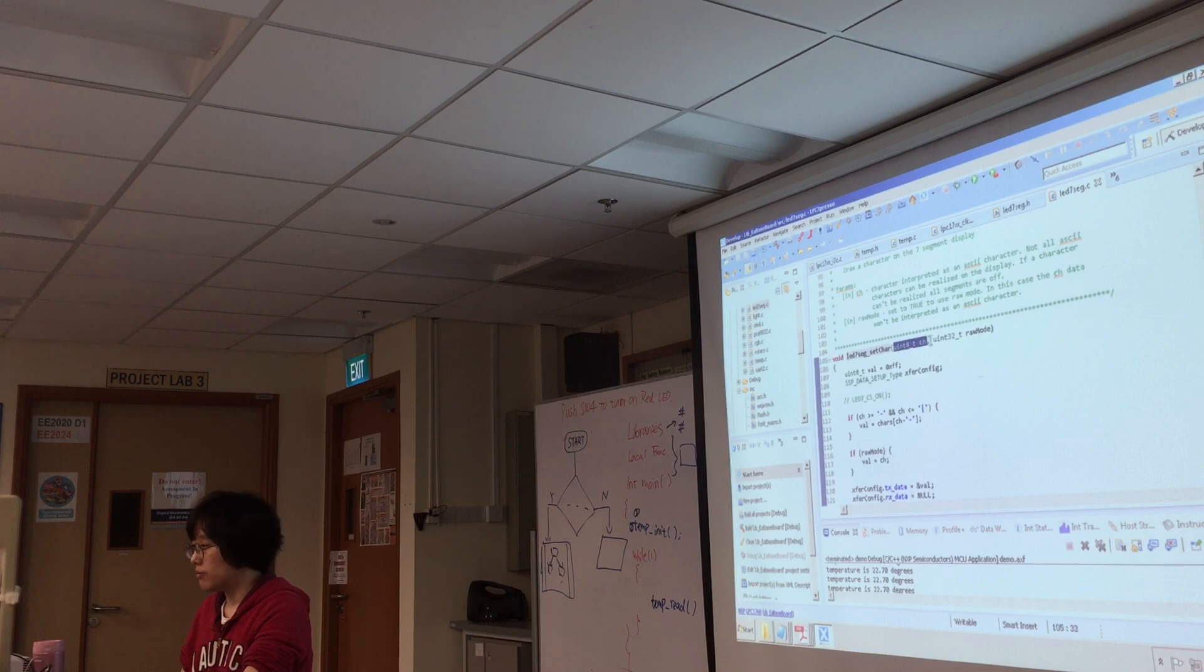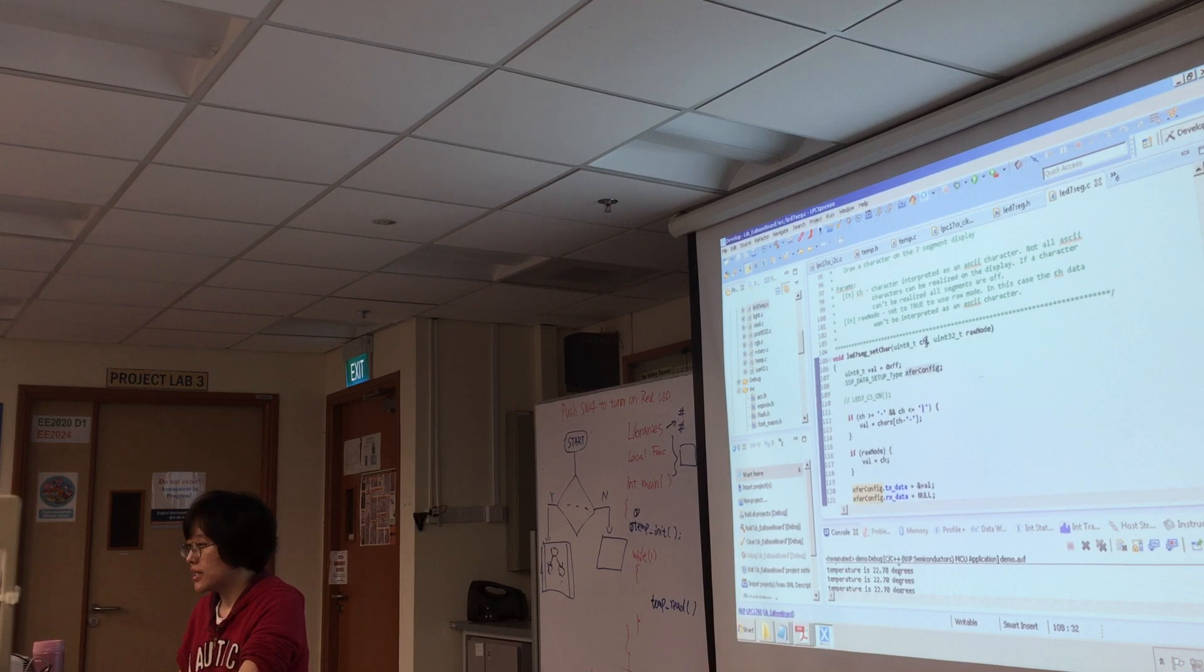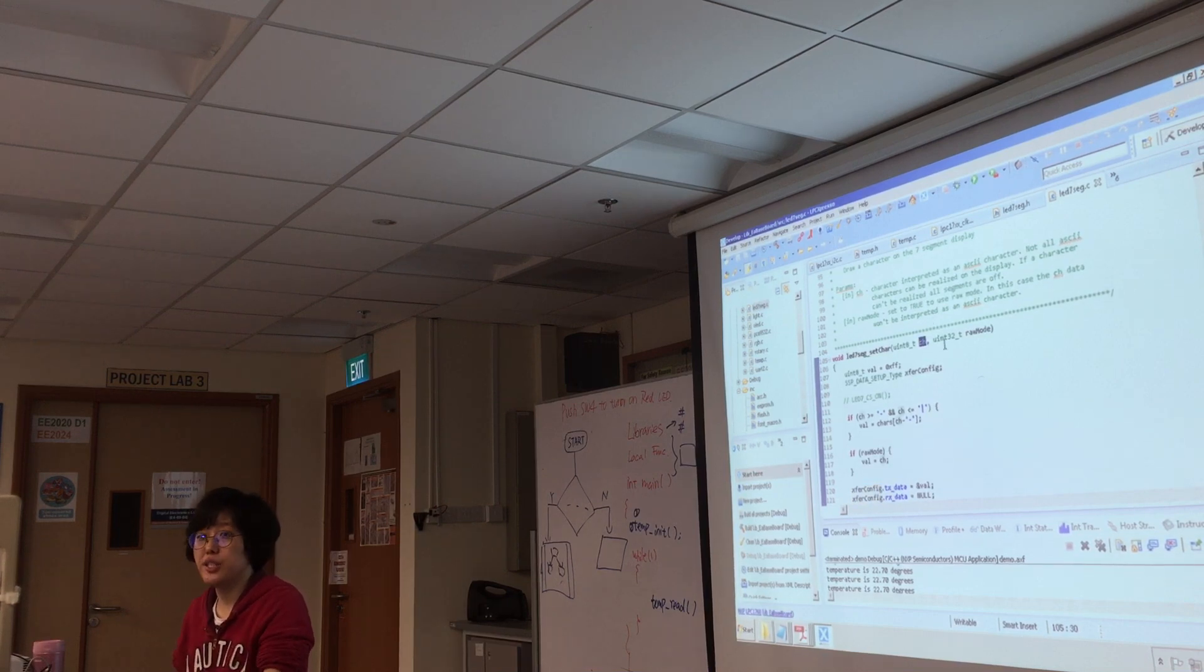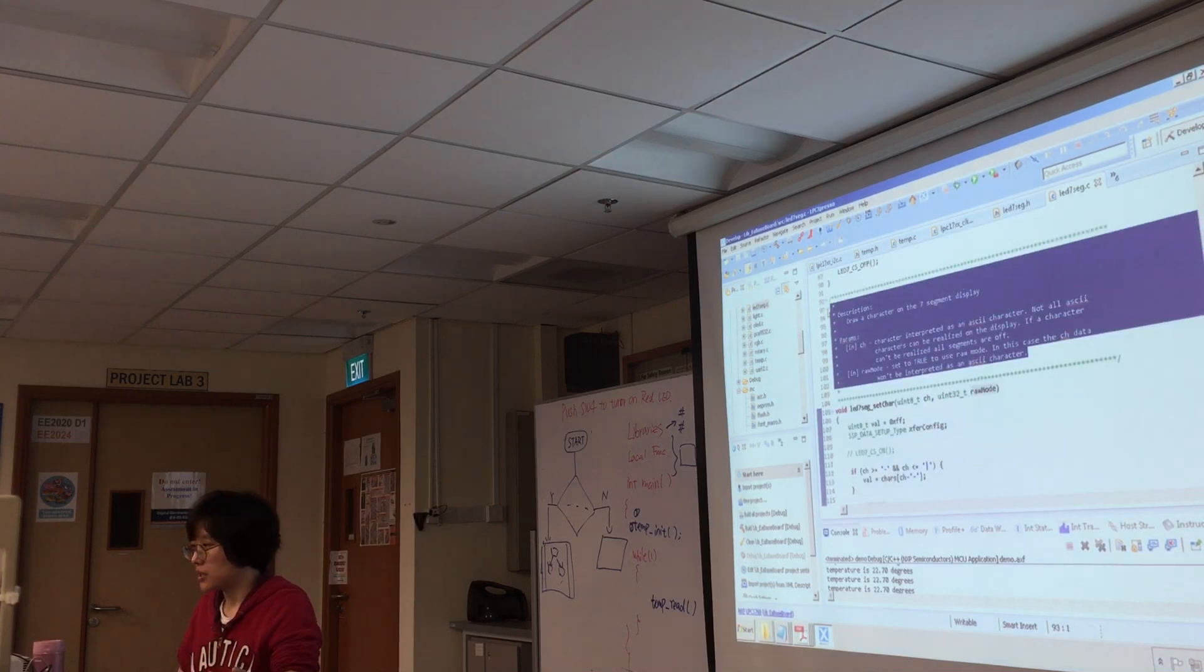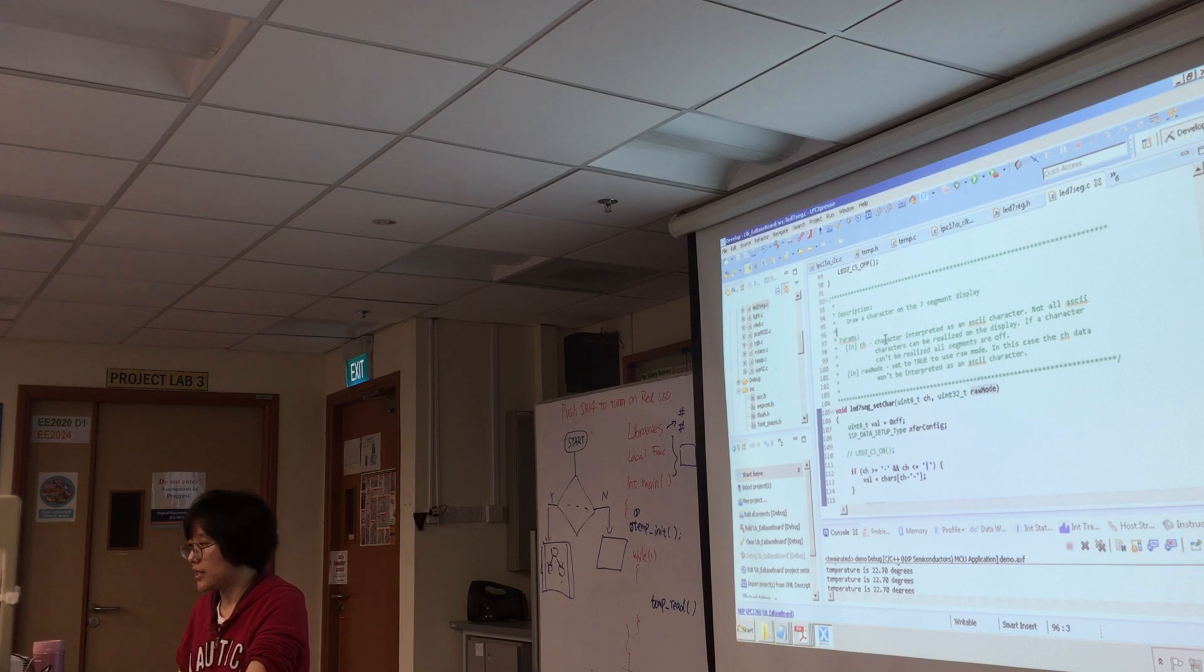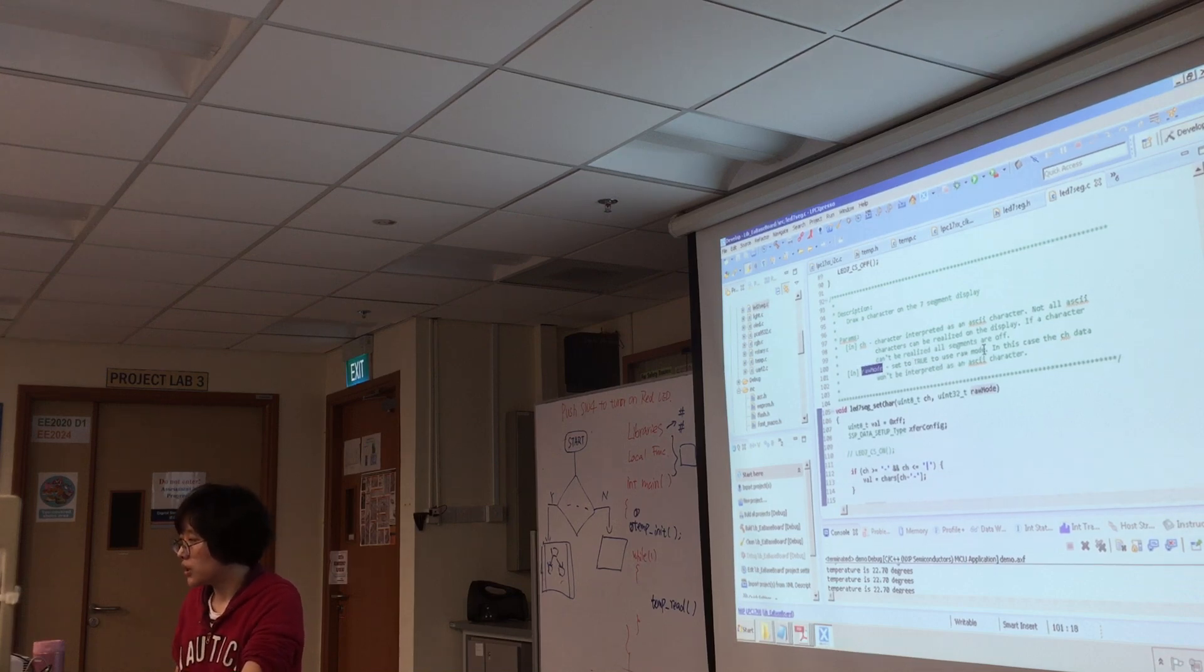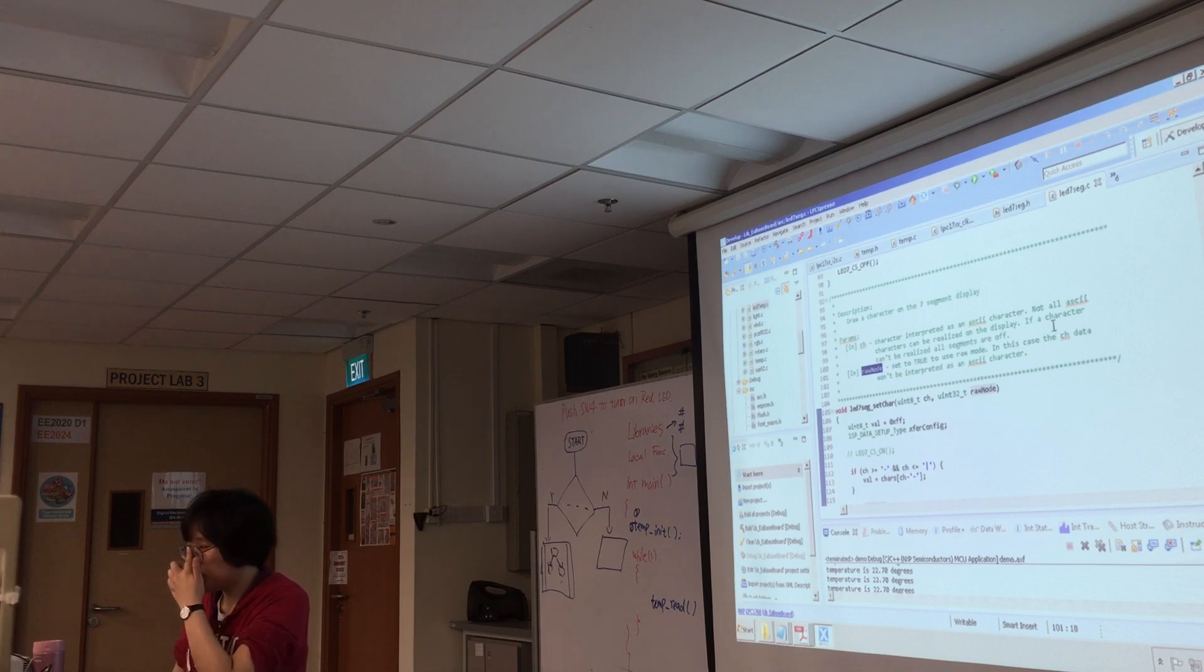So here you can see what values you need to pass to this function. The first one, CH, this must be the character you want to display. And this one, raw mode. It's some mode. Sounds like the seven segment can work at different mode. What does this mean? Here are some explanations. So CH is a character interpreted as an ASCII character. And then raw mode. Set to true to use raw mode.